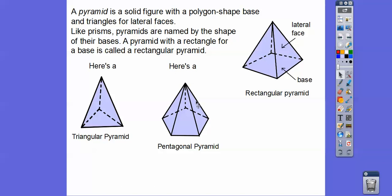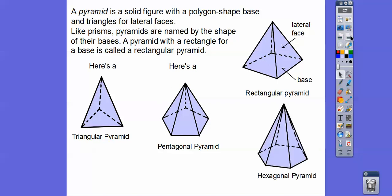A prism would have a congruent pentagon on top with rectangles as the sides — prisms have rectangles as the sides. Pyramids have triangles as the sides. Here's a hexagonal pyramid. In my classroom I actually have these figures — they're about six inches tall. They're great for teaching solid figure lessons in geometry class.